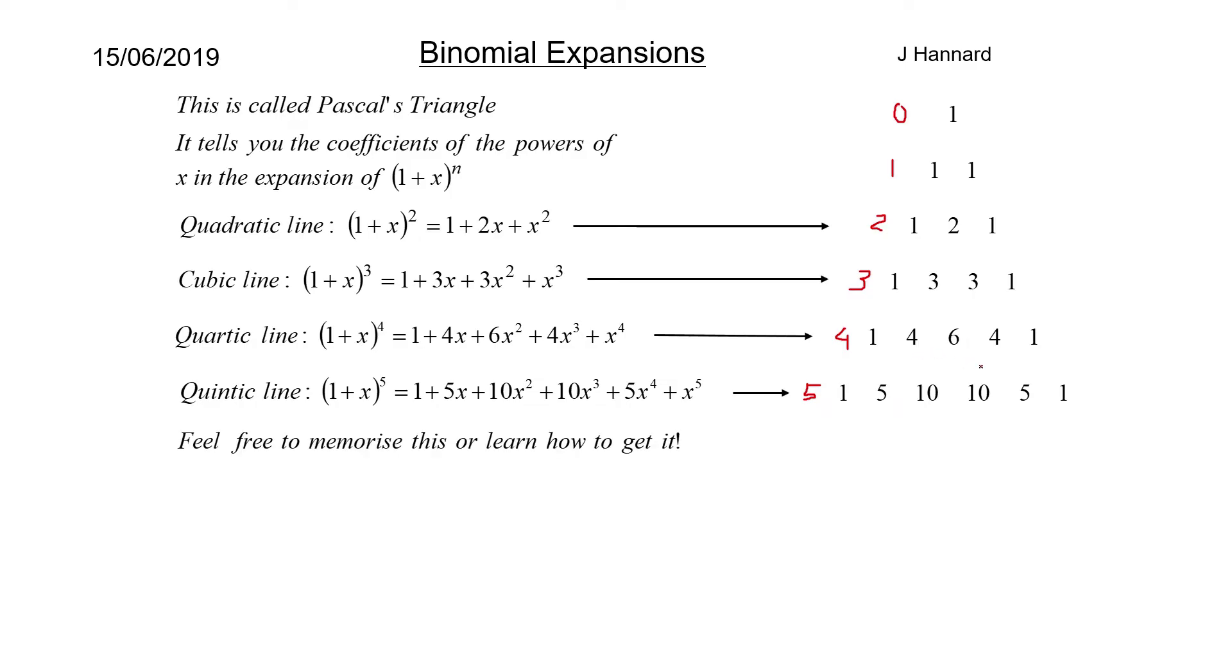There is another way of getting these numbers though. This is called nCr. Last lesson we did something called nPr, which was permutations. This is combinations. nCr is equal to n factorial over r factorial times n minus r factorial. But there's an even easier way than that. Similar to permutations, there is a button on the calculator to do it. We press shift, then the divide button on a Casio calculator, and that is C.